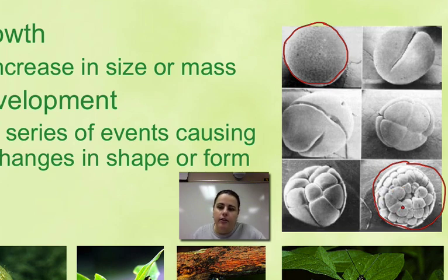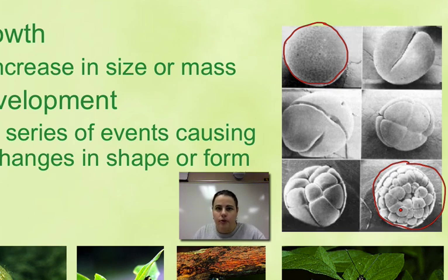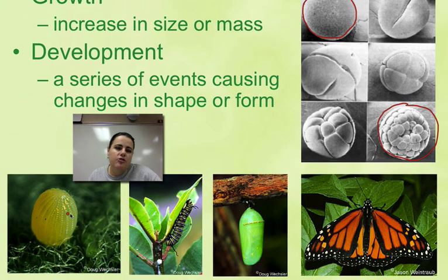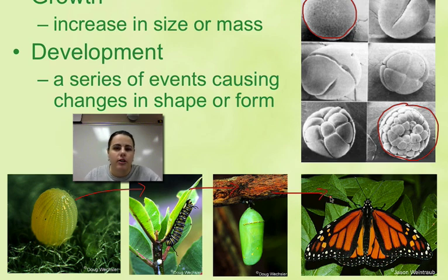These cells are called stem cells, meaning they don't have a specific role yet. Through development and specialization, they will become brain cells, heart cells, bone cells, blood cells, and all the cells inside of you. Over here we have metamorphosis of a butterfly: the egg turns into the caterpillar, then the pupa encased in a chrysalis, and then the adult butterfly — a very obvious change in shape and form.